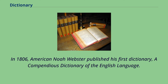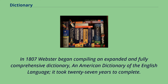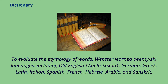In 1806, American Noah Webster published his first dictionary, A Compendious Dictionary of the English Language. In 1807, Webster began compiling an expanded and fully comprehensive dictionary, An American Dictionary of the English Language. It took 27 years to complete. To evaluate the etymology of words, Webster learned 26 languages.